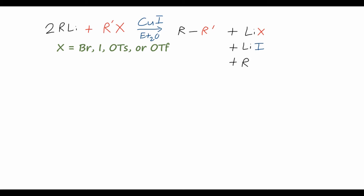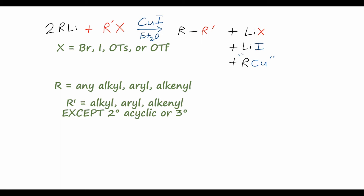R and R' can actually be a wide variety of groups. For R, our organolithium reagent, we can use any alkyl, aryl, or alkenyl group — steric hindrance does not really matter much in this reaction. For the halide R', we're a little bit restricted, but not very much. We can still use any alkyl, aryl, or alkenyl group. The only exceptions are secondary acyclic groups; secondary cyclic groups like cyclohexyl work fine, but tertiary groups are a little too sterically hindered to give good yields for the Corey-House synthesis.